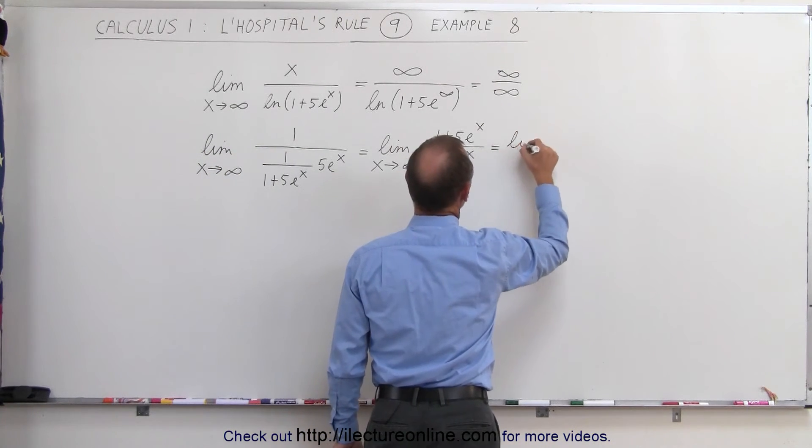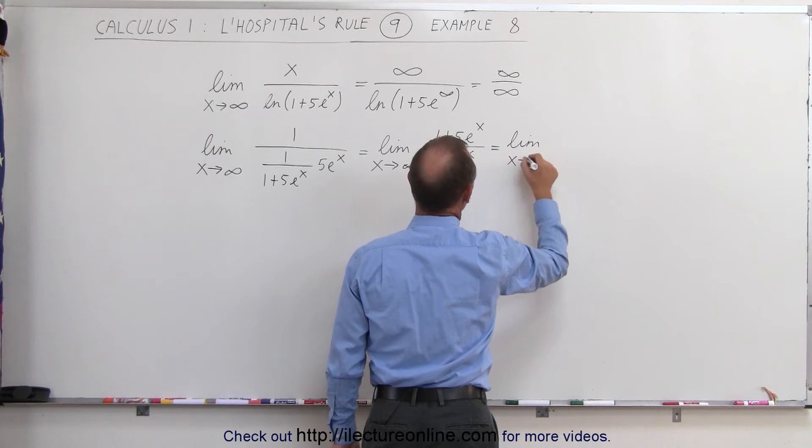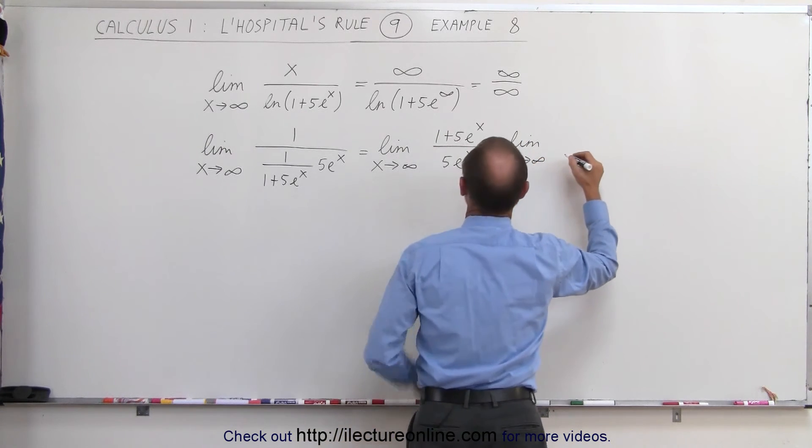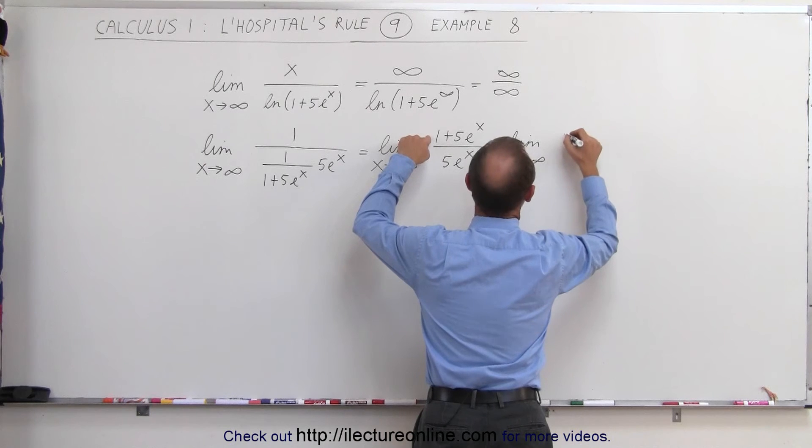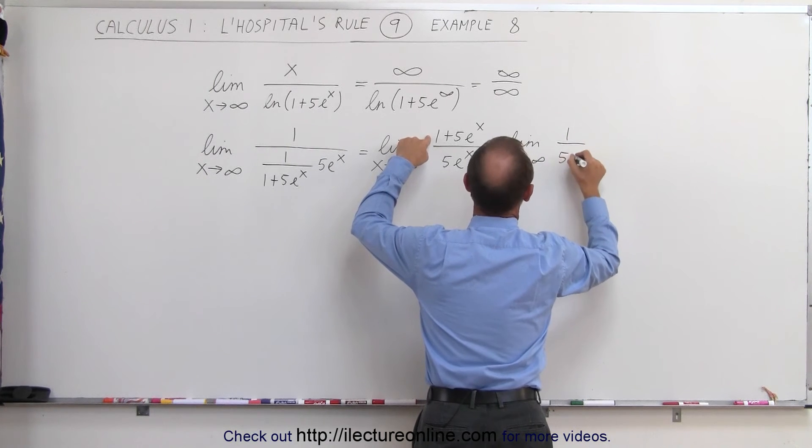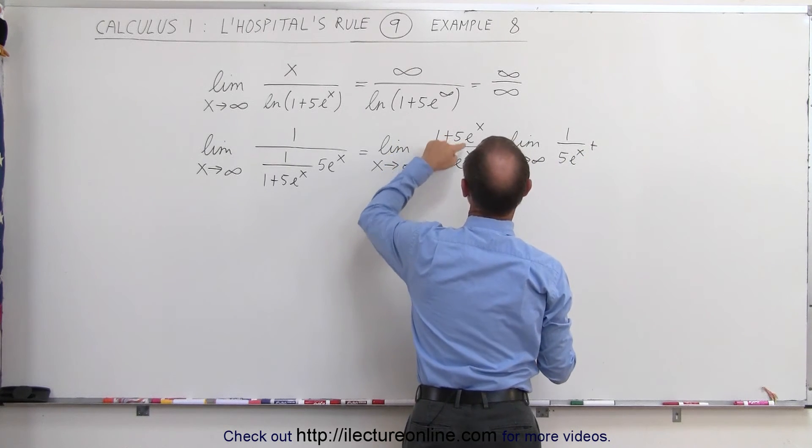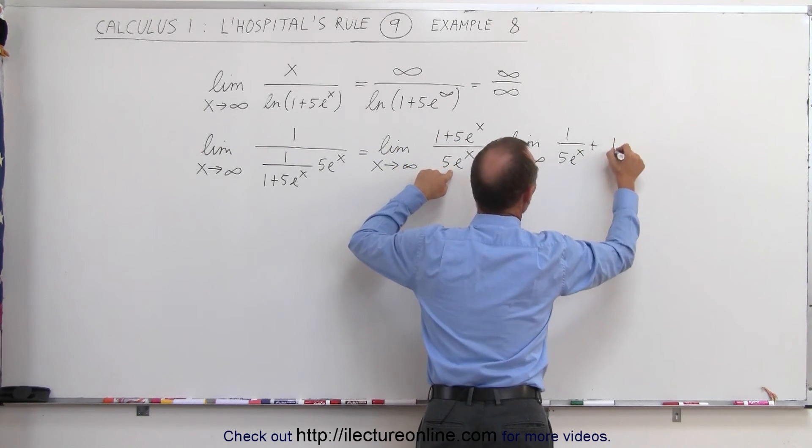This is equal to the limit as x approaches infinity. So 5 divided into 1, we get 1 over 5e to the x plus 5e to the x divided by 5e to the x, which is 1.